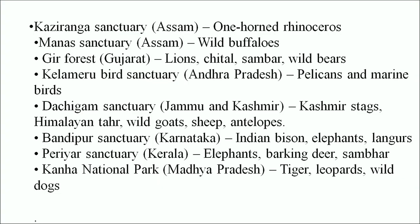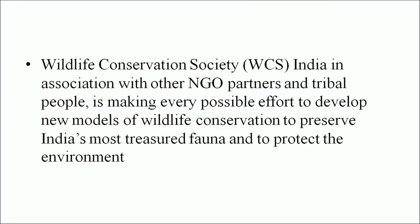Examples include: Kaziranga Sanctuary in Assam — one-horned rhinoceros; Manas Sanctuary in Assam — wildlife buffalos; Gir Forest in Gujarat — lion, chital, sambhar, wild bear; Kailadevi Bird Sanctuary in Andhra Pradesh — pelicans and marine birds; Dachigam Sanctuary, Jammu and Kashmir — Kashmir stag, Himalayan thar, wild goat, sheep and antelope; Kanha National Park — tiger, leopard, wild dog. The Wildlife Conservation Society in India, in association with other NGO partners and tribal people, makes every possible effort to develop new models of wildlife conservation to preserve India's most treasured fauna and protect the environment.